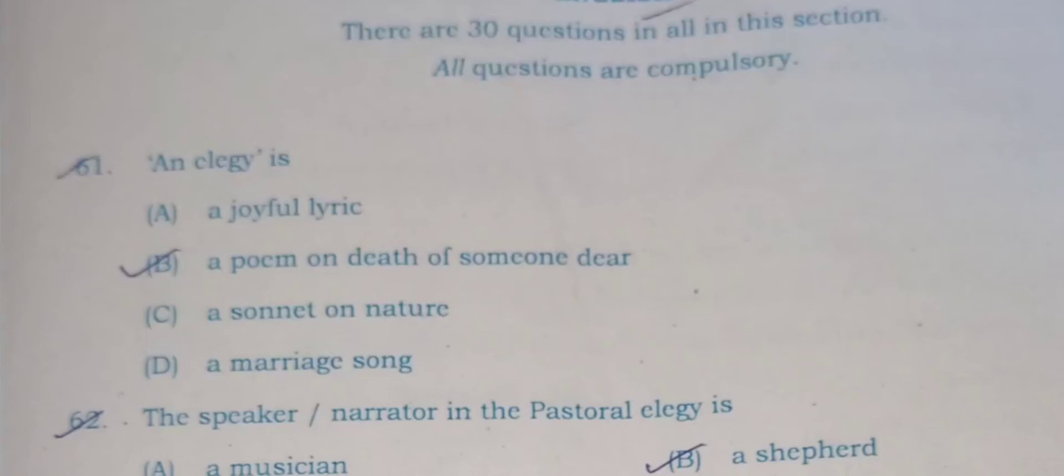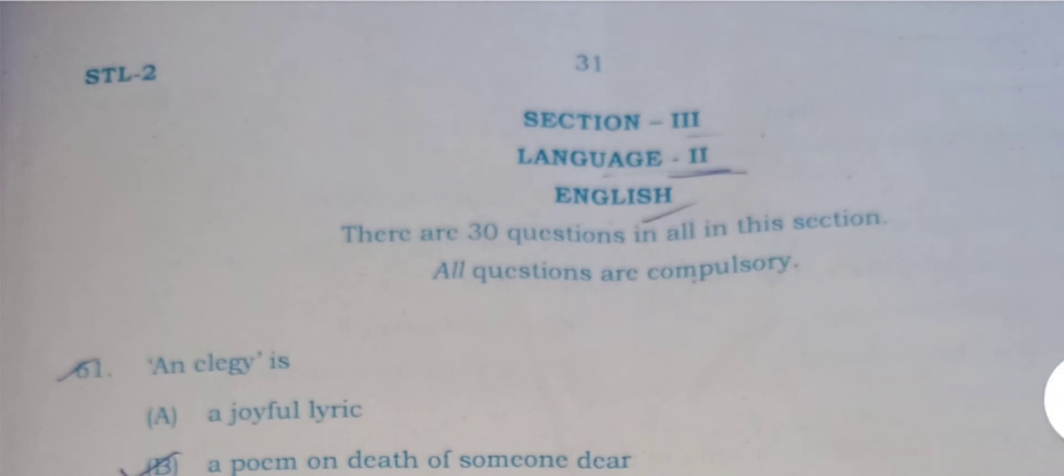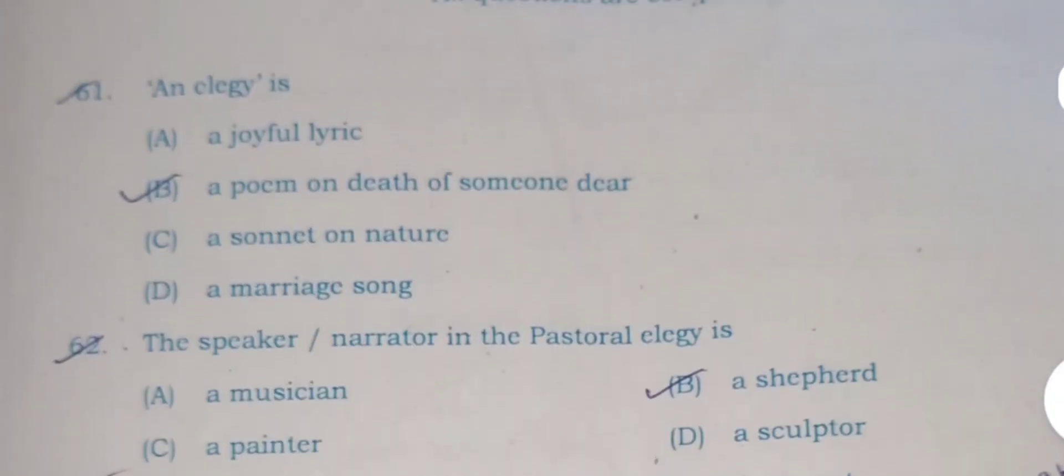Welcome my viewers once again. I am explaining REET paper 2021. Today I want to explain REET paper TGT level 2, its English part section 3, which was conducted in the morning of 26 September 2021 at different centers in the state of Rajasthan.